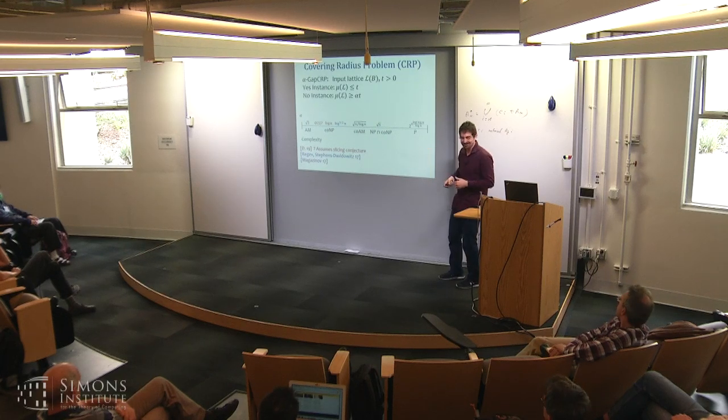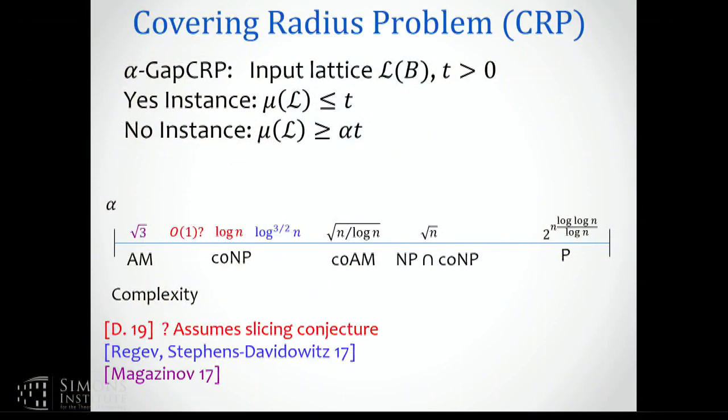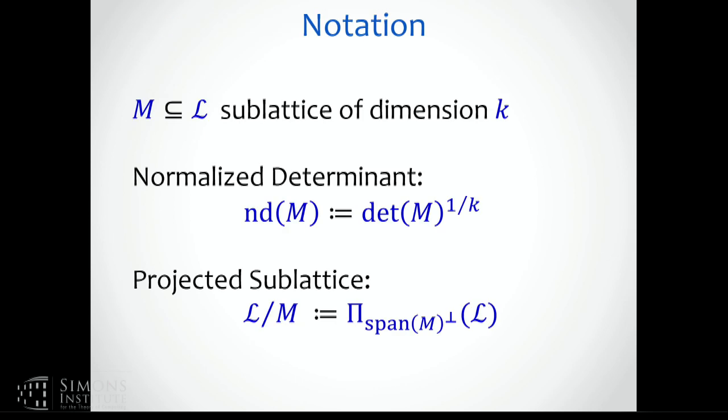Many people like the covering radius. Let's try and say something about how to interpret the Kannan-Lovász conjecture in L2 and the connections around it.